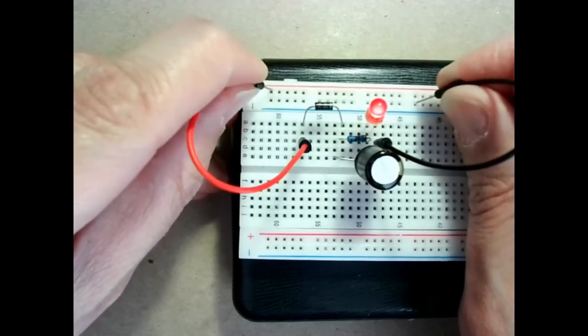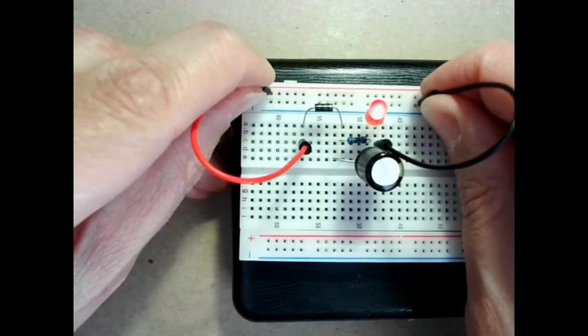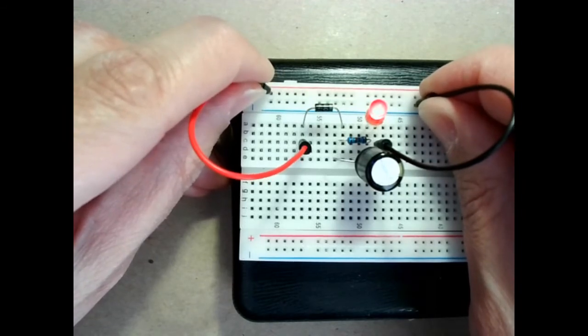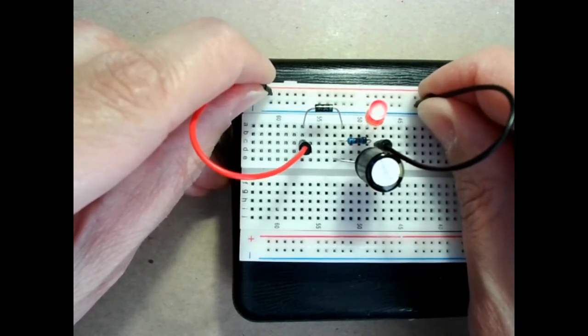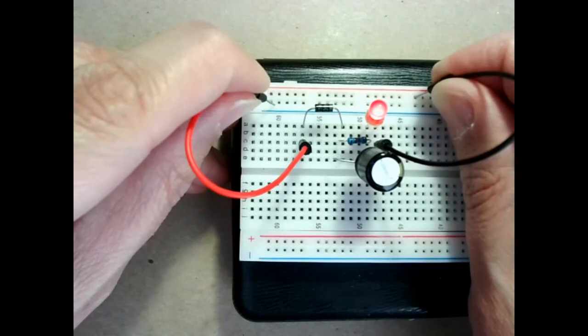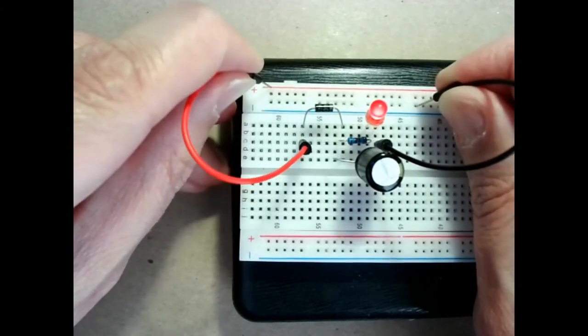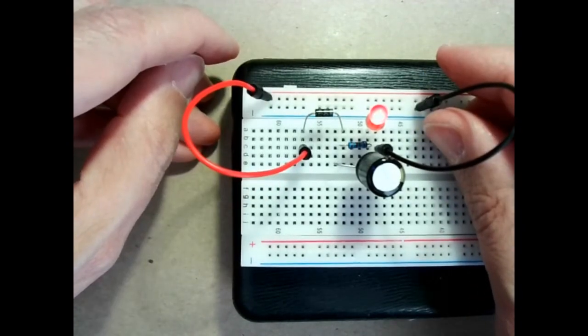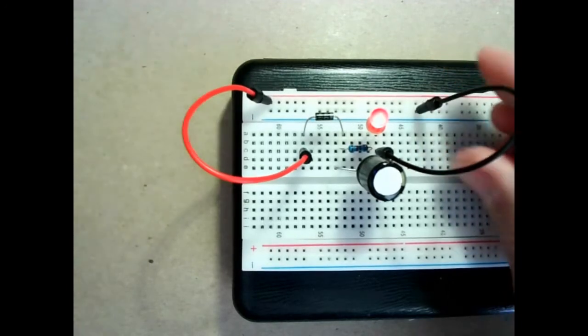The capacitor keeps discharging but it will be recharged again a few milliseconds later. So negative polarity, the capacitor slowly discharges. Positive polarity, the capacitor is recharged again and the LED turns on. That's the way a diode works as a rectifier.